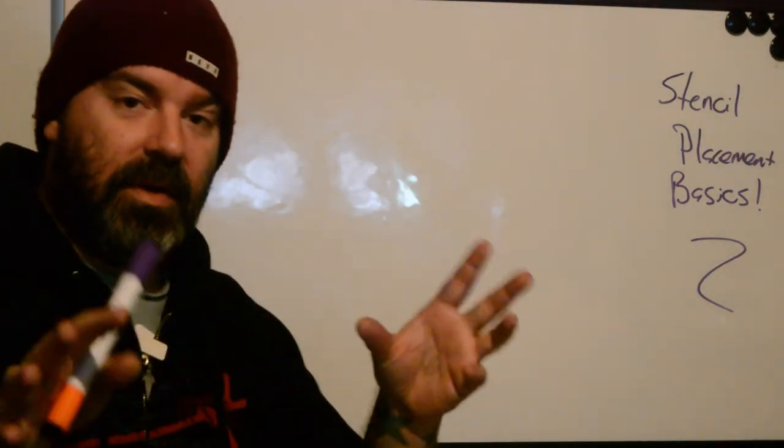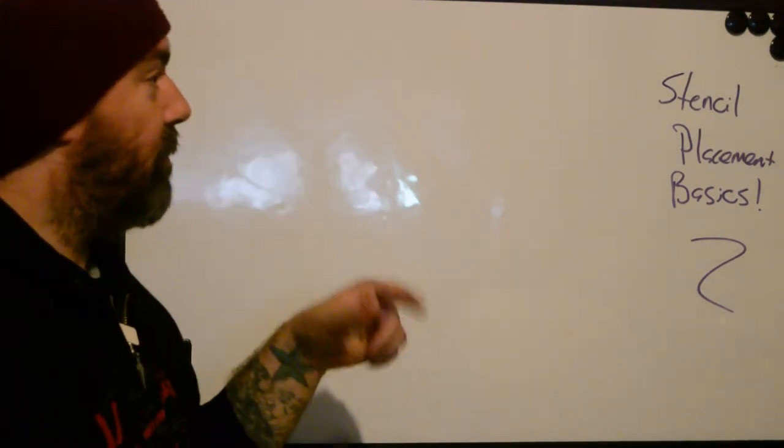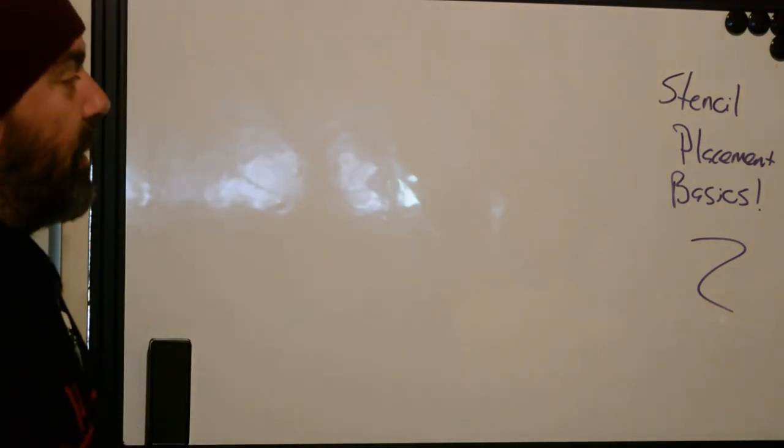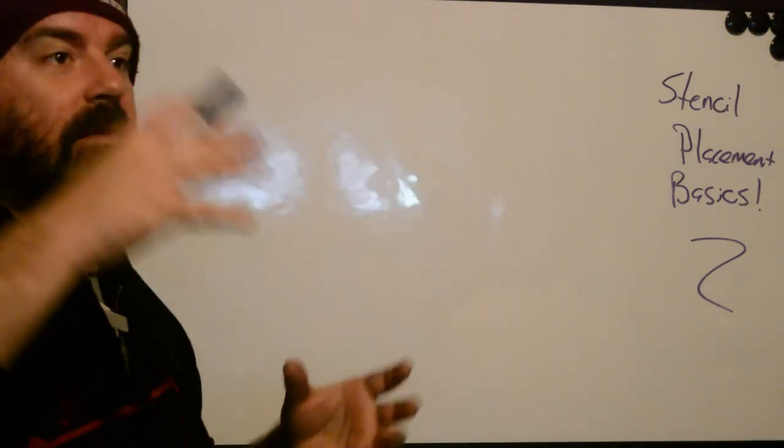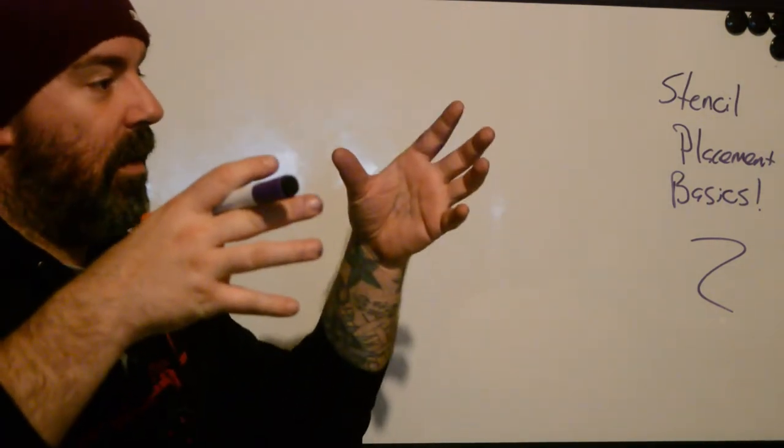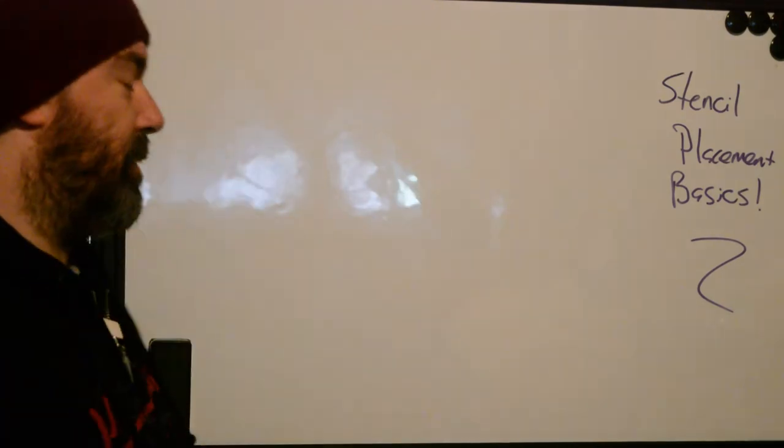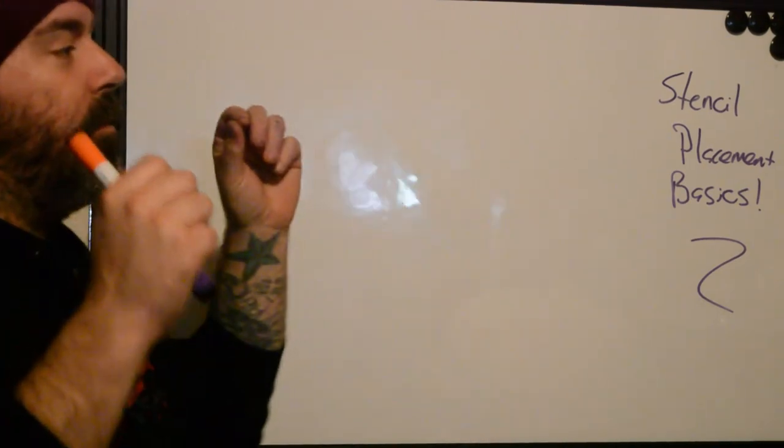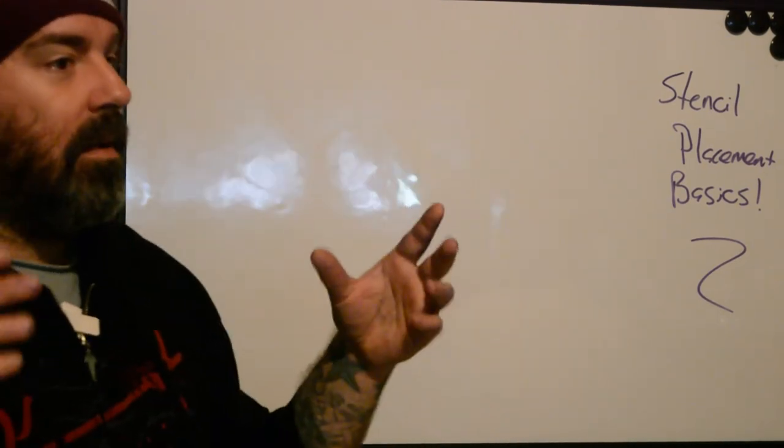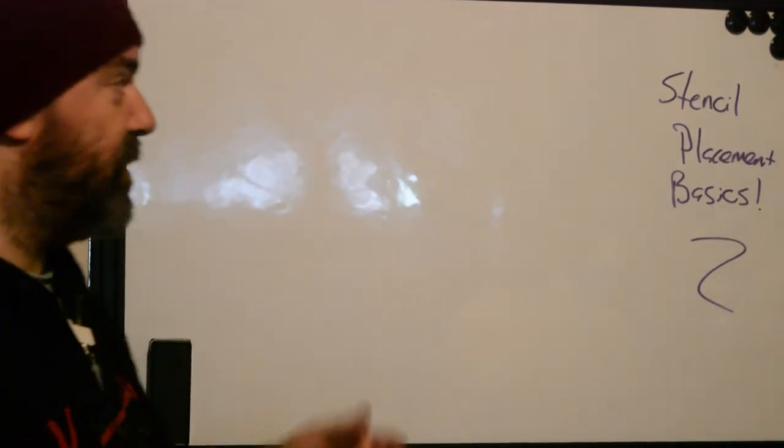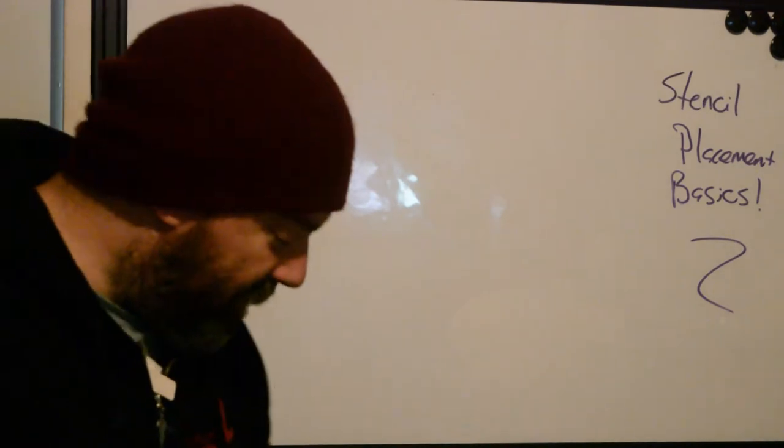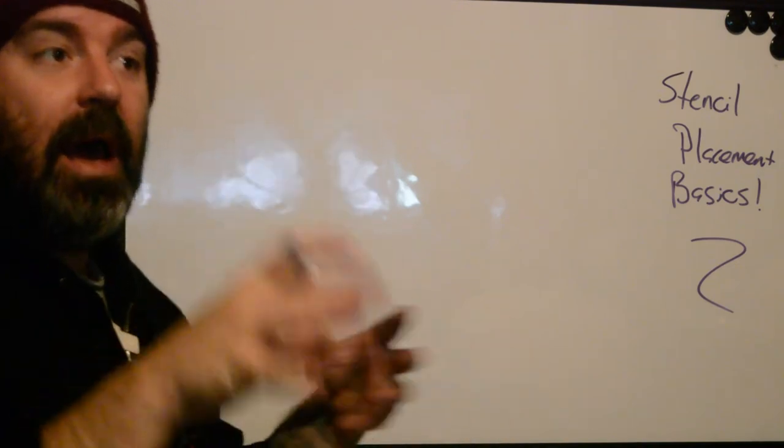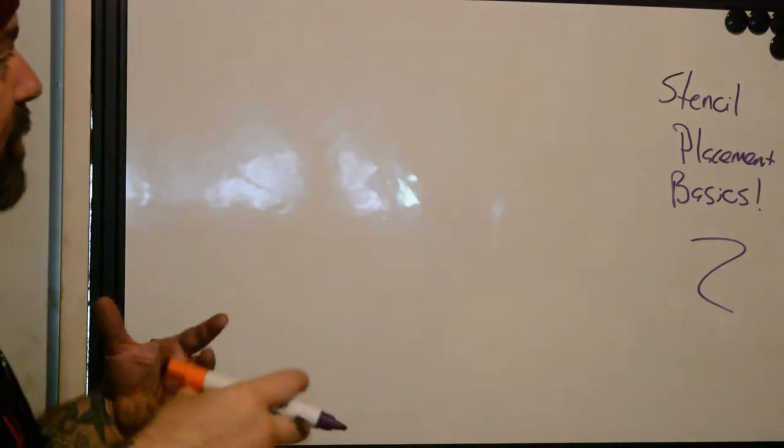What we're going to have to do, kind of like we did with the positioning videos, is go space by space, because there are unique stresses that are applied to each part of the body that we have to understand. When we're thinking about stencil placement, what we're trying to do is create that jump between understanding the individual we're working with when we're creating a custom tattoo, and then trying to make sure that the design that we've made actually fits it.